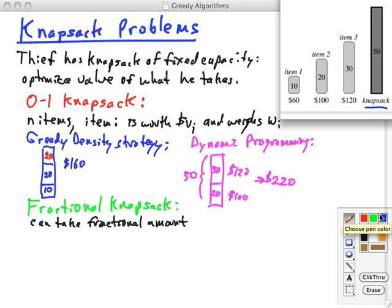But the greedy strategy can work with the fractional problem. Because, of course, it can do the 10 and then it can do the 20, and it's got 20 left here. It can take 20 of item 3, and so that would be 60 and 100. And then the least dense item, we got two-thirds of it, which would be $80.